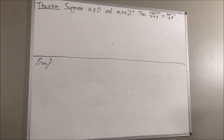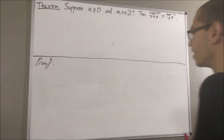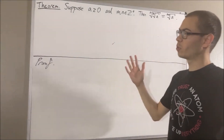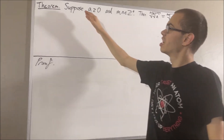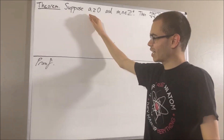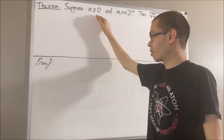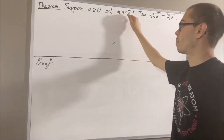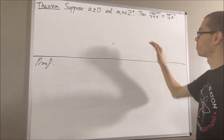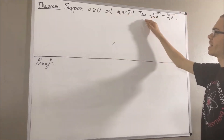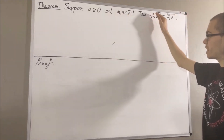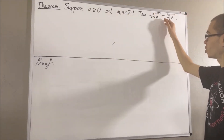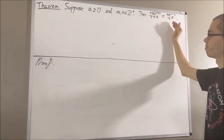Hello! In this video, we are going to prove the following theorem. Suppose a is a real number greater than or equal to zero, and m and n are positive integers. Then the nth root of the mth root of a is equal to the m times nth root of a.